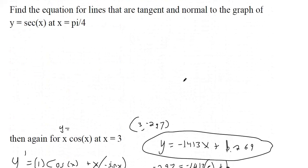To summarize: the tangent line has the instantaneous slope found by taking the derivative and plugging in the coordinate. The normal line is just the line with the negative reciprocal of your tangent line slope — it's perpendicular at that point.